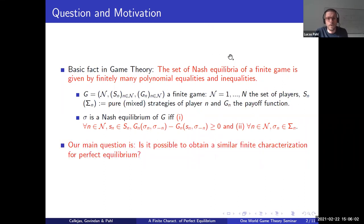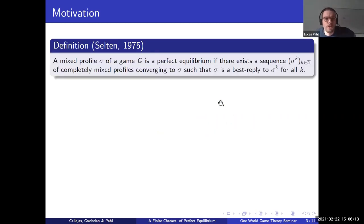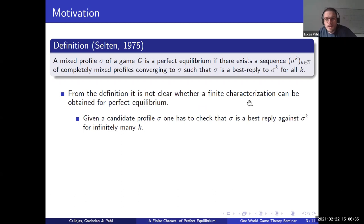The main question in this paper is: is it possible to obtain a similar finite characterization for perfect equilibrium? Let's recall the definition. A mixed profile sigma of game G is a perfect equilibrium if there exists a sequence of completely mixed strategy profiles converging to sigma such that sigma is the best reply against each element of the sequence. From this definition it's not clear whether a finite characterization can be obtained, because you would have to check for a candidate profile sigma infinitely many times whether sigma is the best reply against each element of this sequence.